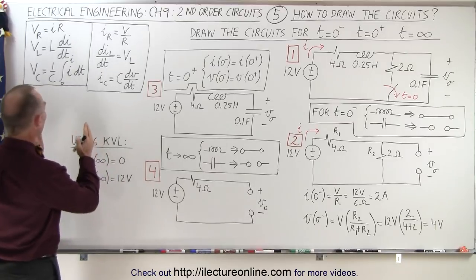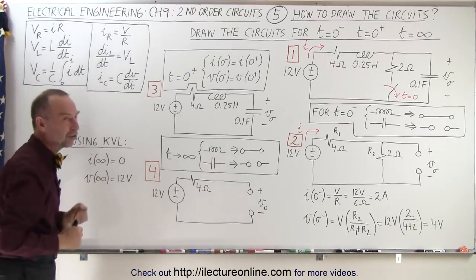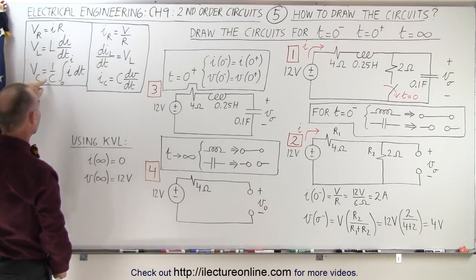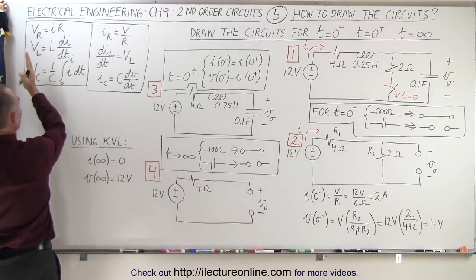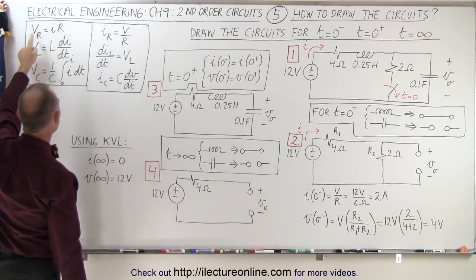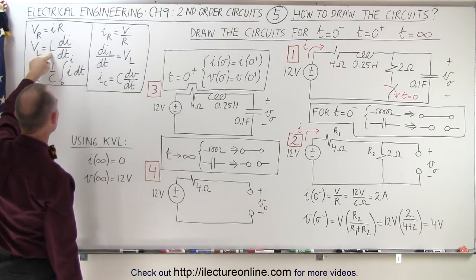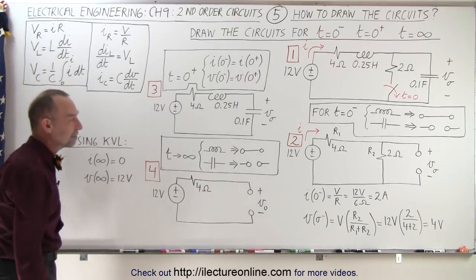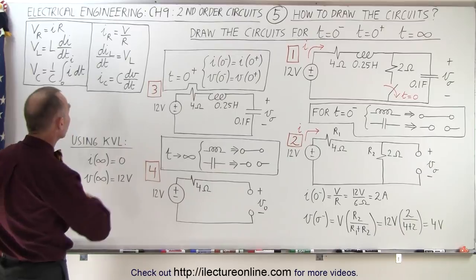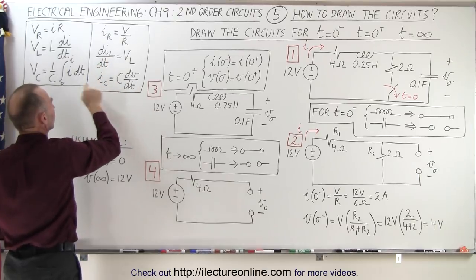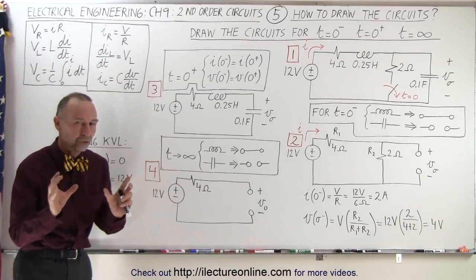The first thing you want to do is make sure you have these two sets of equations handy. The set on the left involves the resistor, inductor, and capacitor in the circuit, giving the voltage across each component. Voltage equals I times R for the resistor; for the inductor it's inductance times dI/dt; and the voltage across the capacitor is 1/C times the integral of I dt. You also want the versions of those equations solved for the currents.